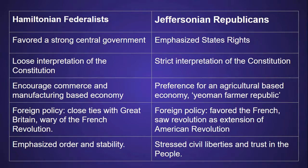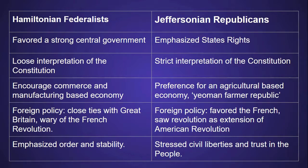Diving a little deeper into their thoughts on government, the Hamiltonians felt the Constitution should be interpreted loosely, and felt the elastic clause allowed the government to do things outside of what is written in the Constitution. On the other hand, the Jeffersonian Republicans believed in the strict interpretation of the Constitution — government should only be able to do what is allowed for in the words of the Constitution. For example, they opposed the creation of a national bank because the Constitution makes no mention of a national bank.